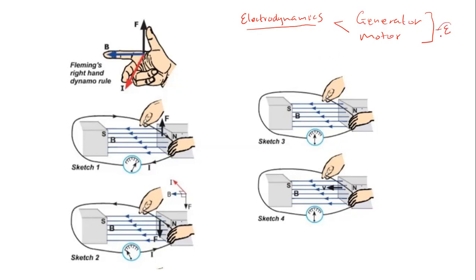Let me refresh you on what you learned in Grade 11 about electromagnetism. In sketch number one, you see two bar magnets — one named south and the other named north. Magnets have imaginary field lines, and these field lines always move from the north pole to the south pole. These are the field lines denoted by the letter B.